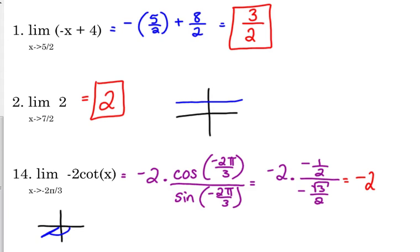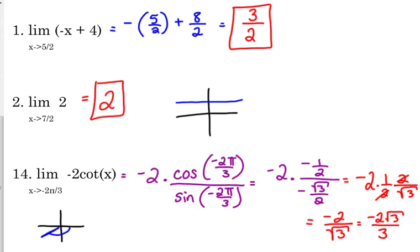I'll keep the two in front, flip the bottom fraction over and multiply. The twos cancel, giving us negative two over the square root of three. Rationalizing that gives us negative two square roots of three over three. In pre-calc we rationalize, but in calculus they don't always require it. On the final exam they'll likely rationalize it for you.